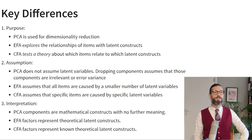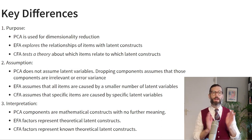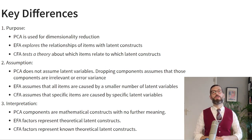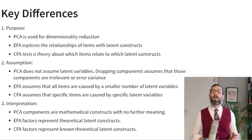Let's go over the key differences between these techniques. Principal component analysis is used for dimension reduction. Exploratory factor analysis explores how different items are associated with different latent constructs, and confirmatory factor analysis tests a theory about which items are related to which latent constructs. Principal component analysis does not assume the existence of latent variables — however, dropping components assumes those components are irrelevant or consist of error variance. Exploratory factor analysis assumes that all items are caused by a smaller number of latent variables, and confirmatory factor analysis assumes that items are caused by specific latent variables.